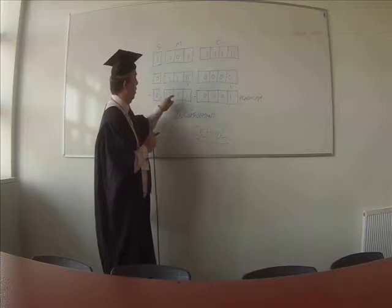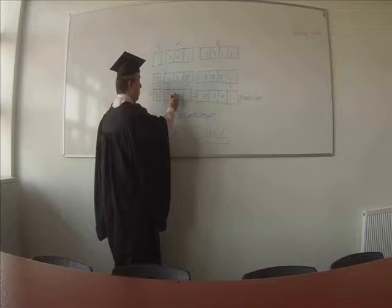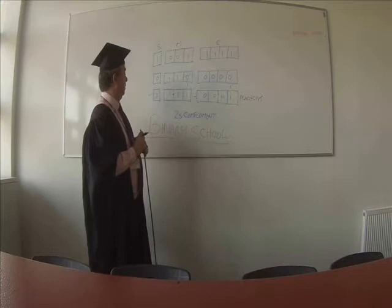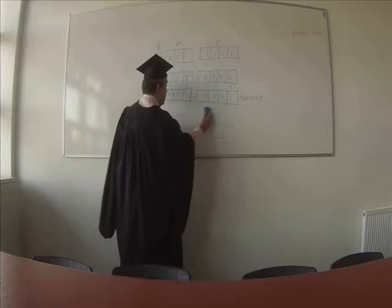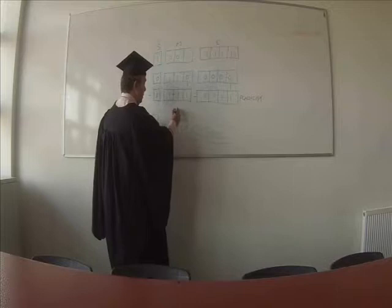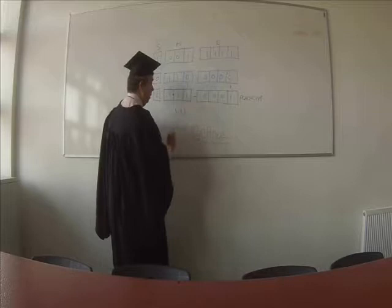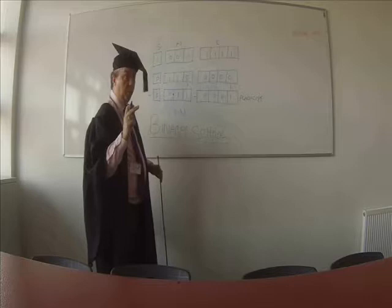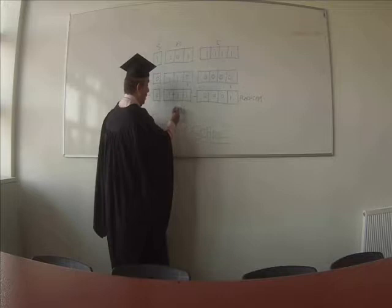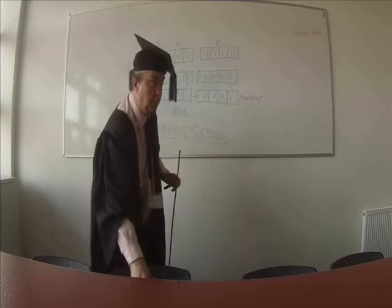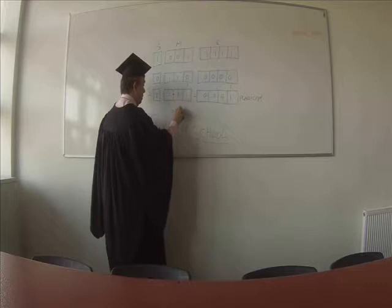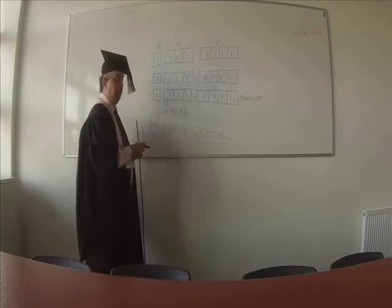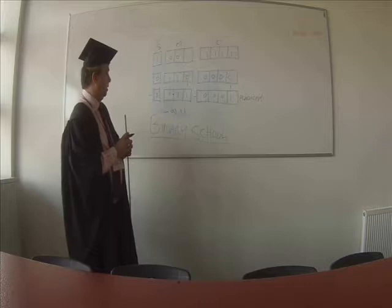Now remember, we assume that the binary point is between that digit and that digit. So before we apply the exponent, we have one point one one. The value of the exponent is negative one, so that means we move the binary point one place to the left. There's a zero there - that's where the binary point now ends up. So my number is minus 0.111.